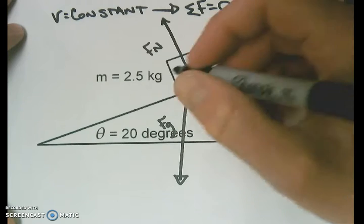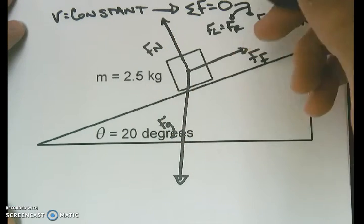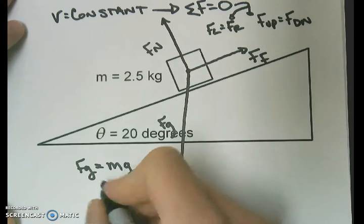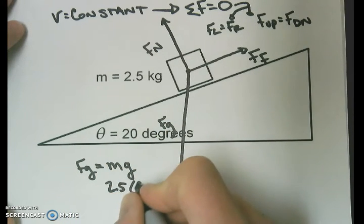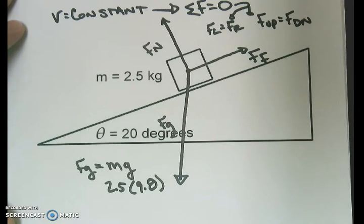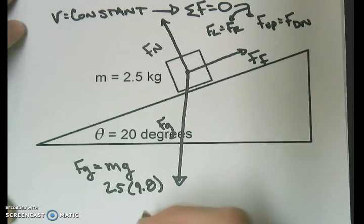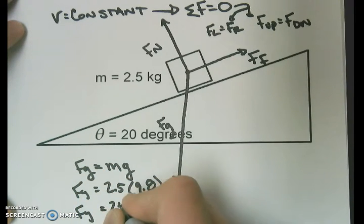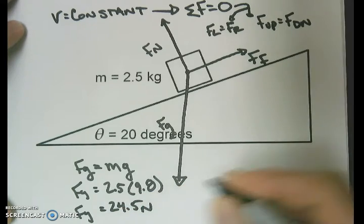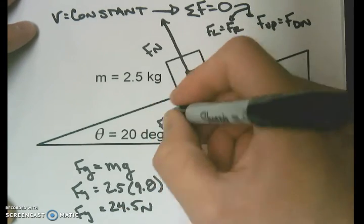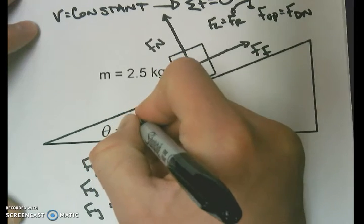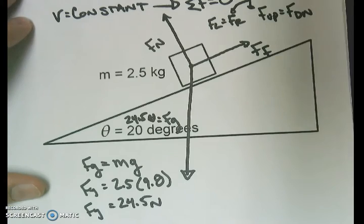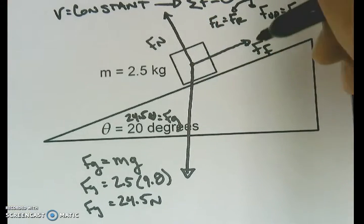First and foremost, if the mass is 2.5, then that means the force of gravity is going to be that mass times little g. So it's going to be 2.5 times 9.8, which gives us 24.5. So our force of gravity is 24.5 newtons.